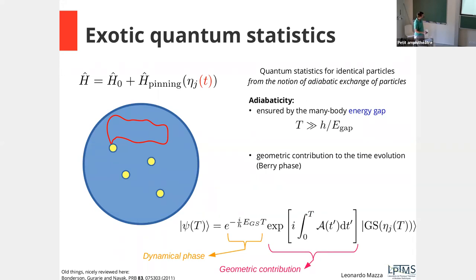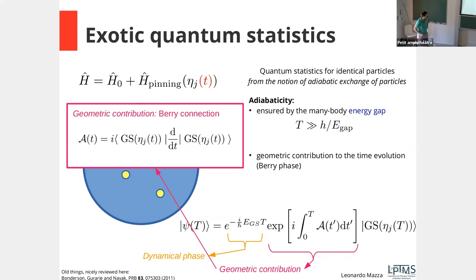Under adiabatic evolution, my initial state evolves to a final state that has acquired a dynamical phase — related to the energy of my ground state, scaling with the time taken, and uninteresting to us — and a geometric contribution. The geometric contribution does not grow linearly with time; it has a finite limit as T goes to infinity. This geometric contribution, highlighted by Berry's work, is the object I want to look at.